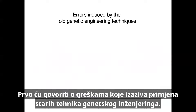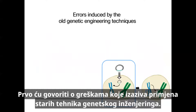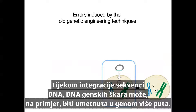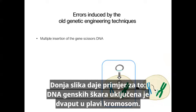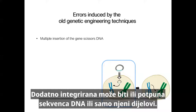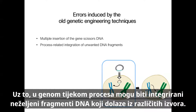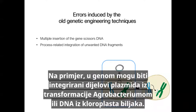First, I will talk about errors induced by the application of old genetic engineering techniques. During integration of the DNA sequences, the gene scissors DNA can, for example, be inserted multiple times in the genome. Both the complete DNA sequence or only parts of it can be additionally integrated. In addition, unwanted DNA fragments can be integrated into the genome coming from different sources during the process — for example, parts of the plasmid from the agrobacterium transformation, or DNA from the chloroplasts of the plant can be integrated into the genome.